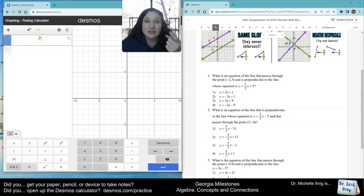Well, perpendicular, we know they're going to make right angles. Hopefully, in your head, you knew you needed the opposite reciprocal slope. So you knew it was going to have to be choice two or four. But let's pretend you didn't know that. How do we use the graphing calculator?